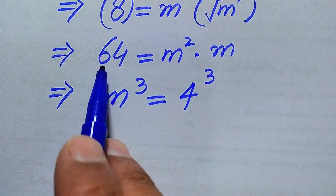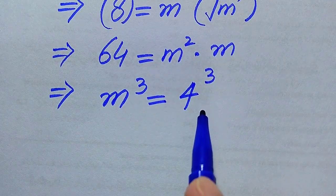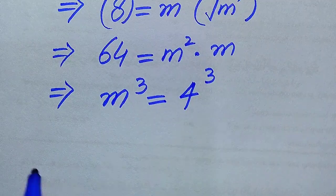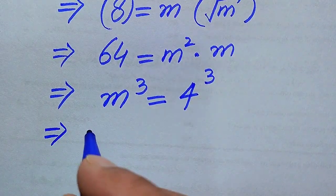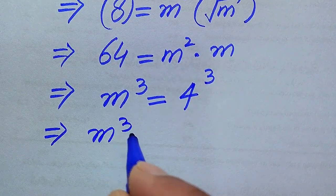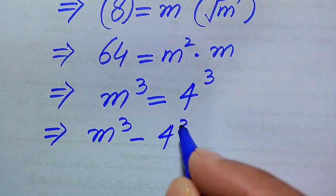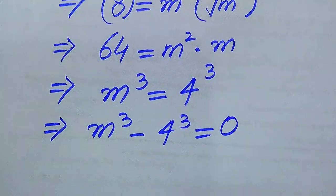We know that 64 equals 4 cubed. Now we move 4 cubed from the right hand side to the left hand side, giving us m cubed minus 4 cubed equals 0.